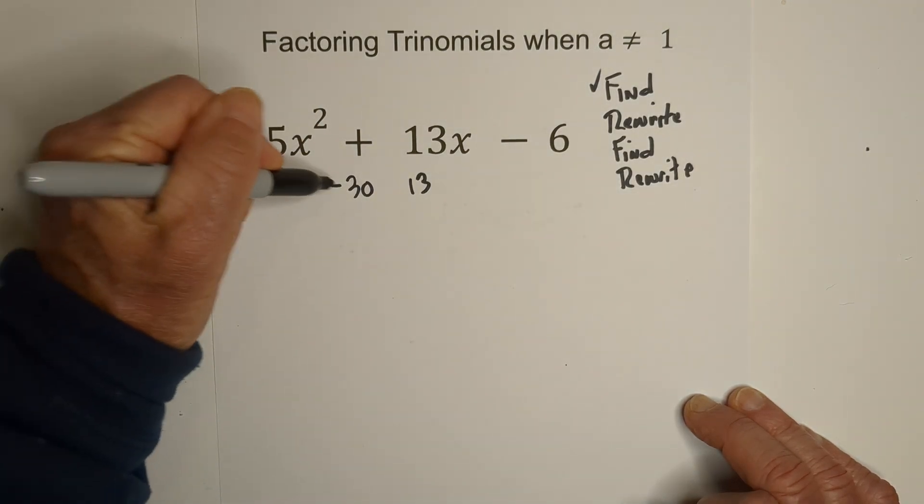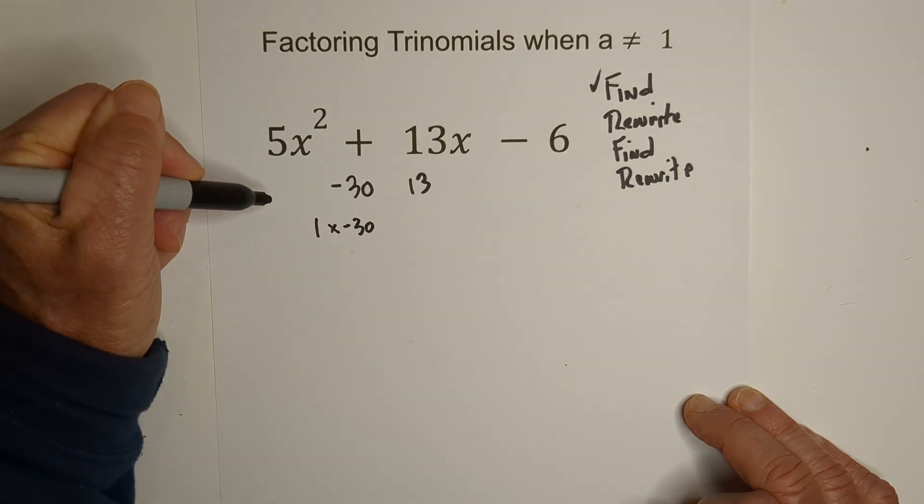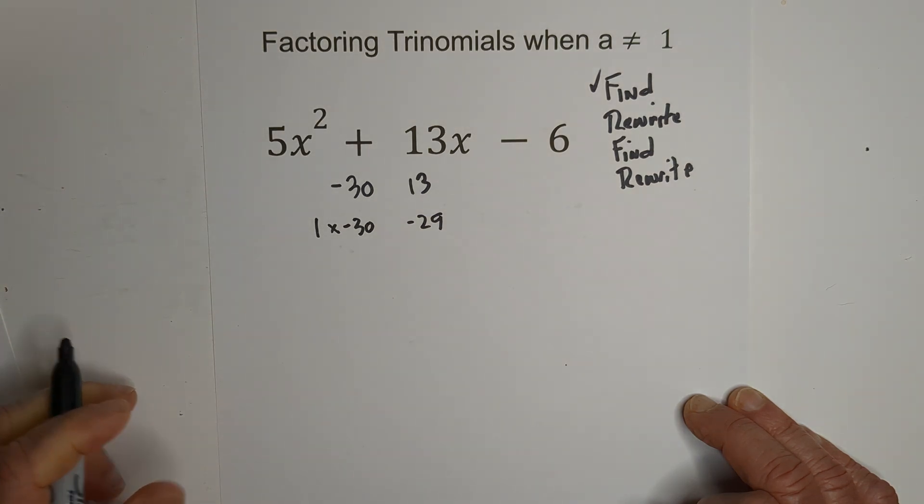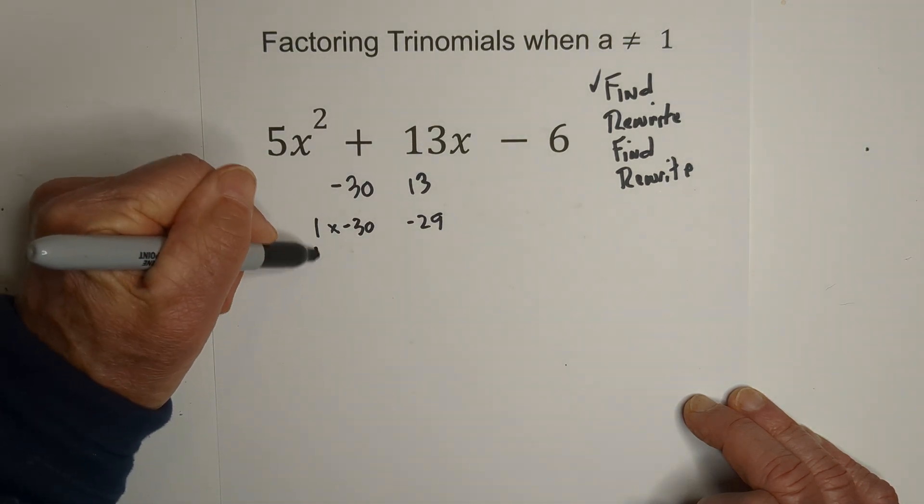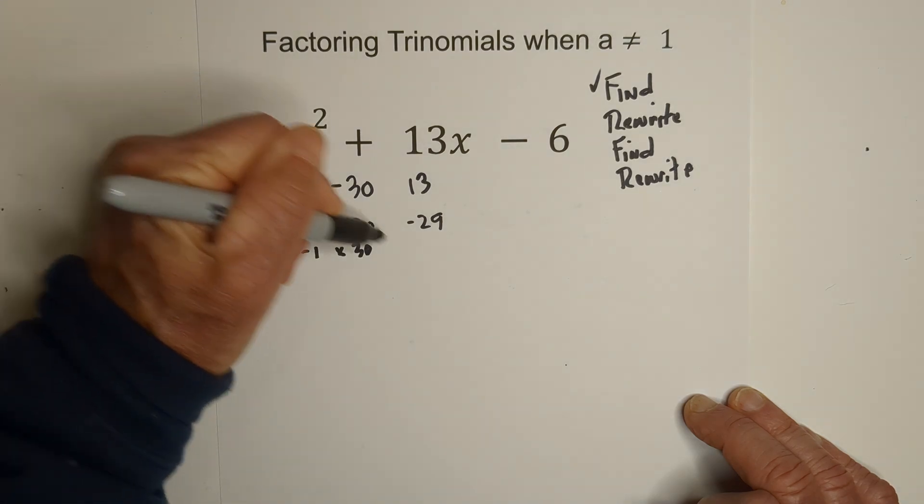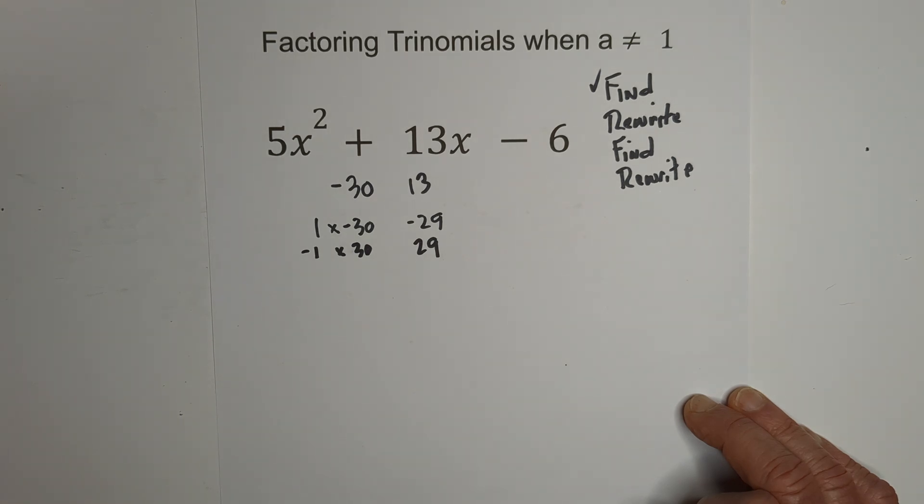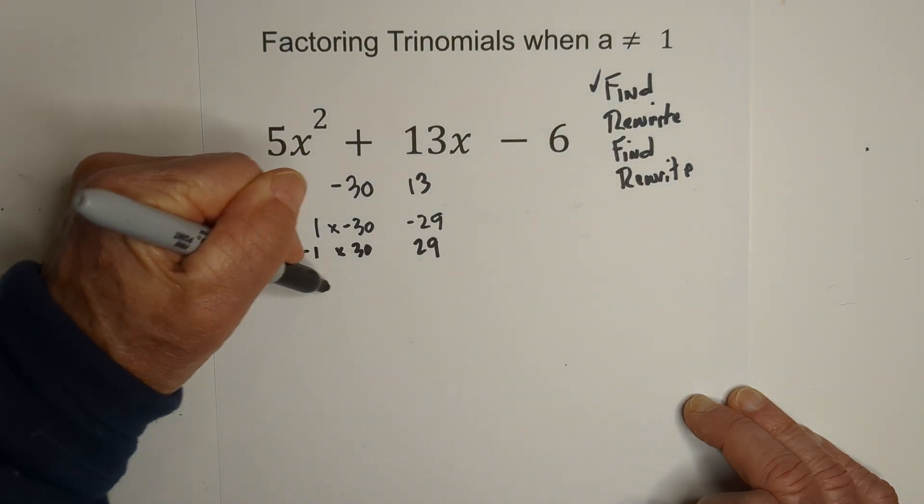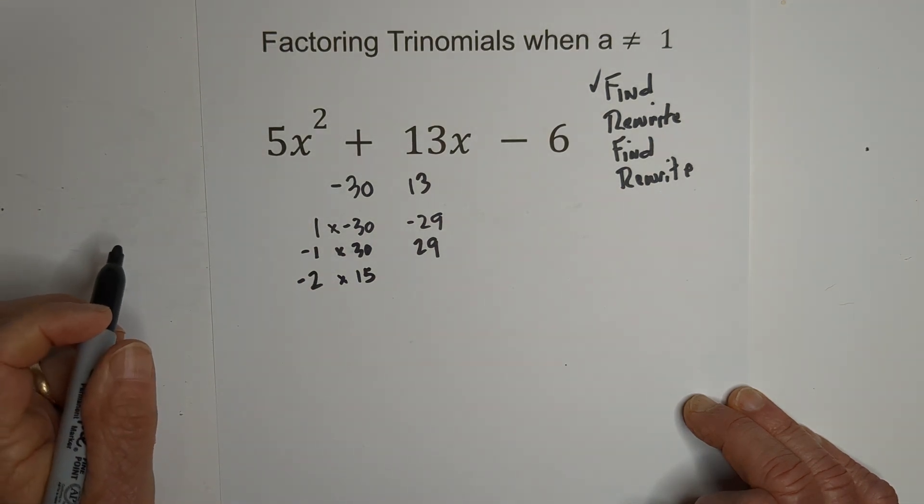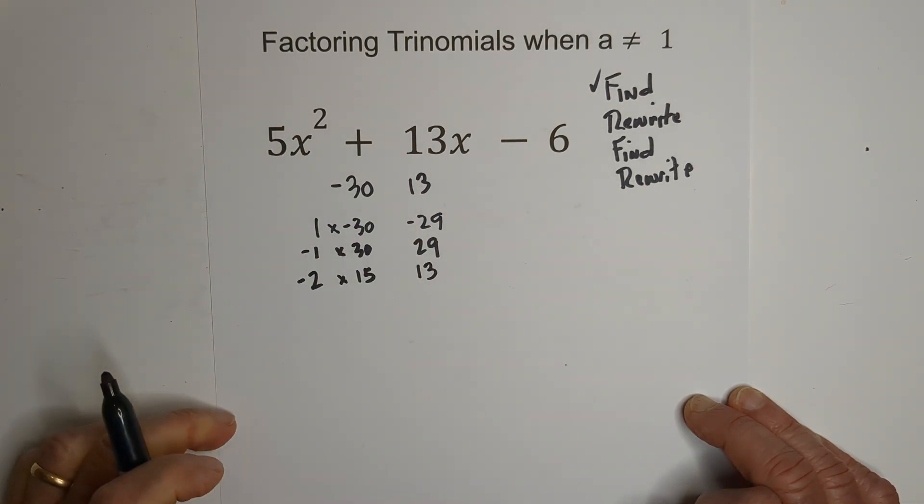Let's get started with some factors. This is a negative, so we can go 1 times a negative 30, that does indeed equal negative 30. When we add them together, that's a negative 29, so that does not work. And then, we can go negative 1 times 30, that indeed equals negative 30, but that's a positive 29. Let's go negative 2 times 15. When you multiply that together, it is negative 30, and when you add them, it indeed is 13.